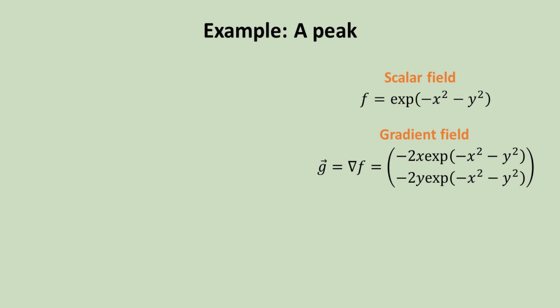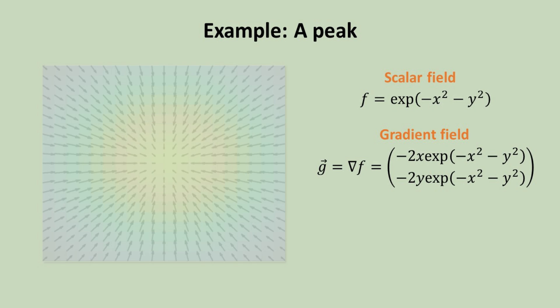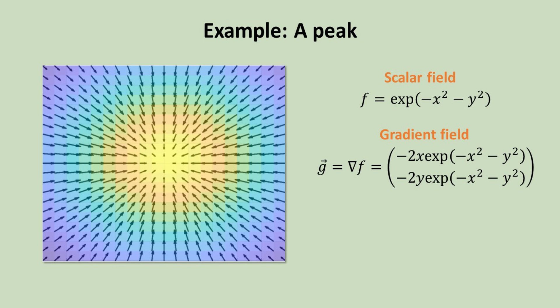Let's consider some concrete examples, the simplest of which is a scalar field described by a Gaussian function. Its gradient field can be easily obtained. The color map shows the scalar field, where the blue and yellow indicates low and high elevation, respectively.